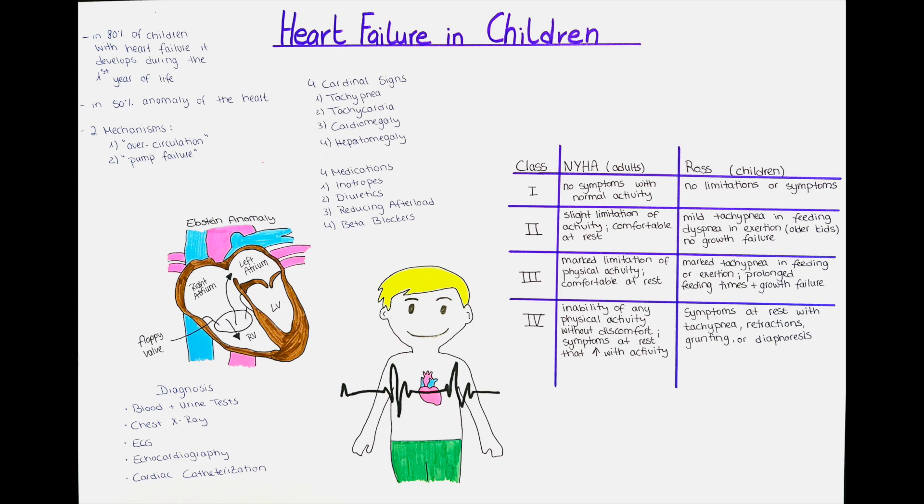They also help the cardiomyocytes to recover as they prevent further myocyte injury and allow for recovery. The last group is beta blockers. They are used in patients with chronic heart failure as they improve the left ventricular systolic and diastolic function, help to control the heart rate, and prevent severe arrhythmias. They also lower the afterload and preload.